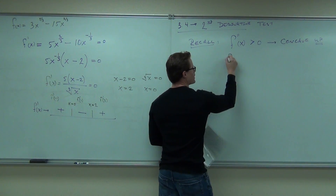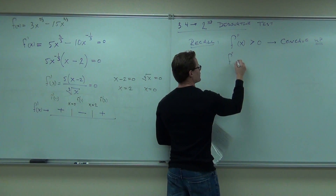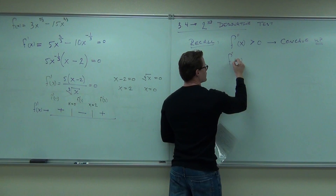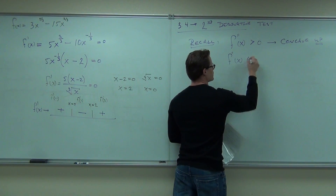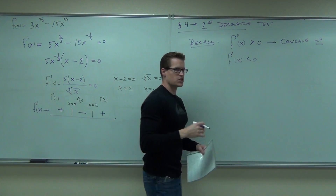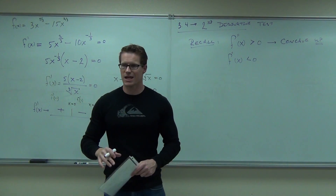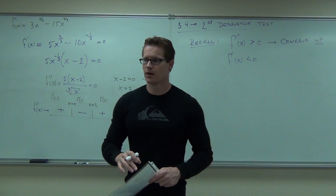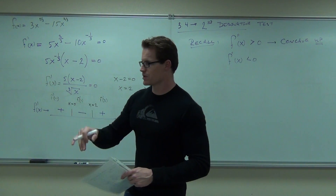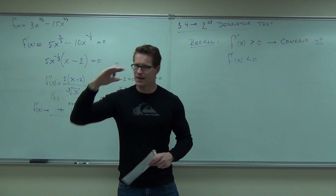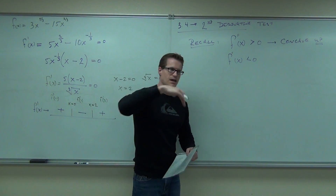If your second derivative is negative, your slope is decreasing. That's going to be a concave down shape.